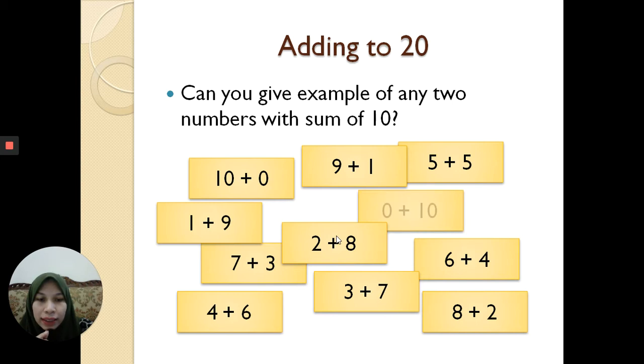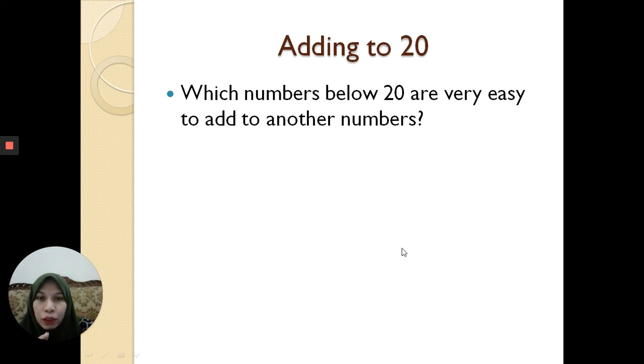As you can see, look at this example: 1 plus 9 is equal to 10. 9 plus 1 also equals 10. Even though the position is different but with the same numbers, they make the same answer. You need to remember that. Same goes as 2 plus 8 and 8 plus 2. Both of them will give an answer of 10.